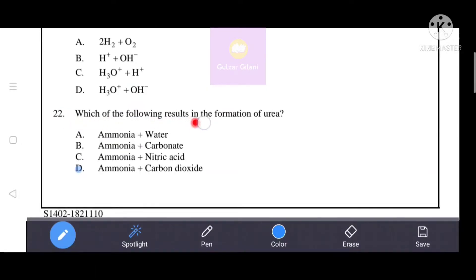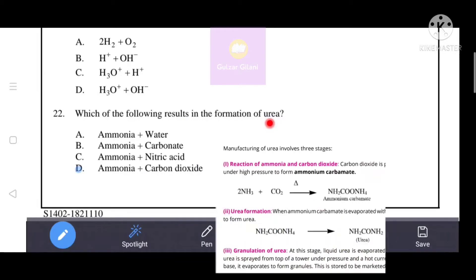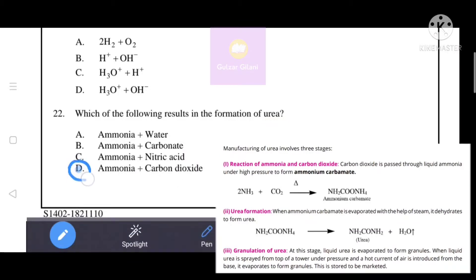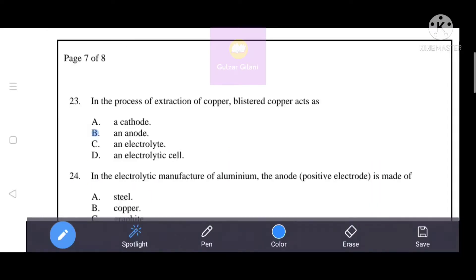Which of the following results in the formation of urea? Carbon dioxide is passed through liquid ammonia under high pressure to form ammonium carbonate. When ammonium carbonate is evaporated with the help of steam, it dehydrates to form urea. That's why option D, ammonia plus carbon dioxide, is the correct answer.